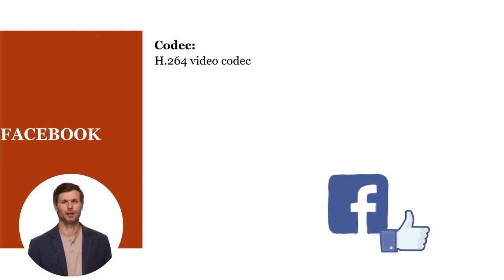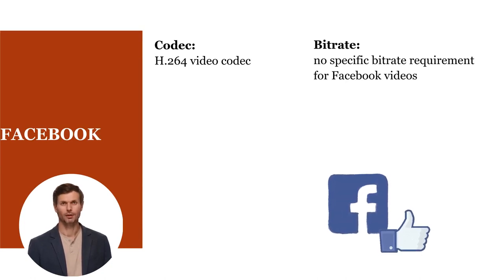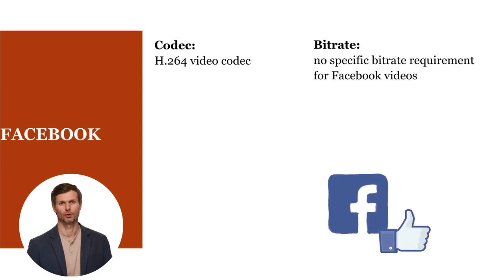While there's no specific bitrate requirement for Facebook videos, it's recommended to use a bitrate that balances quality and file size. For 720p videos, a bitrate of around 2 to 4 megabits per second is typically sufficient, while 1080p videos may require a bitrate of 5 to 8 megabits per second or higher for optimal quality.